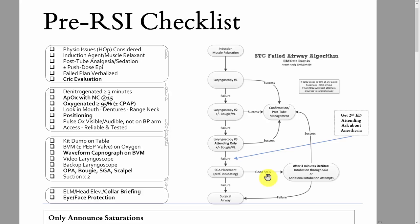The role in this checklist is really to just call it out and hear the docs confirm that they've either done it or thought about it. Physio issues considered — what HOP stands for is hypotension, oxygenation, and pH issues. You just call it out and the docs say yeah, we thought about it.